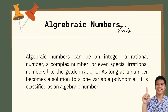Here's the first fact about algebraic numbers. Algebraic numbers can be an integer, a rational number, a complex number, or even special irrational numbers like the golden ratio. As long as the number becomes a solution to a one-variable polynomial, it is classified as an algebraic number.